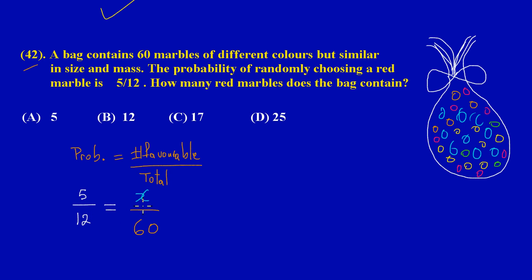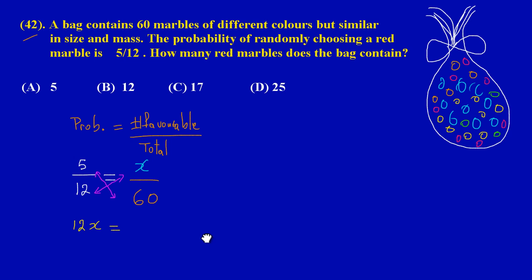Now simply what we can do is just transpose for X. We have a fraction here, so we could just simply cross multiply, by saying 12 times X and we could say 5 times 60. Since we have a fraction, 12 times X would obviously give us 12X, and 5 times 60 would be equal to 300.